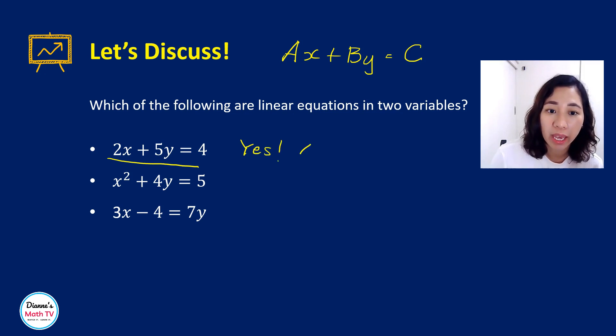In particular, your A is, what is this saying class? A is just the number multiplied to x, B is the number multiplied to y, and C is just your constant. And what this is saying is that the constant should be isolated from the variables, from the terms containing variables.